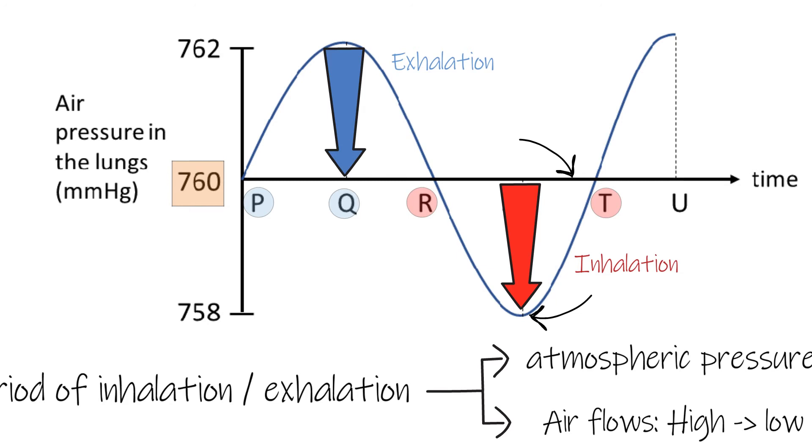If you still find it difficult, you can just draw an arrow between the curve and the 760 mmHg line. The head of the arrow always points down.